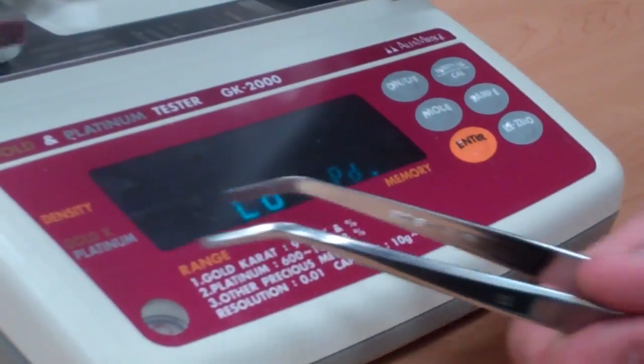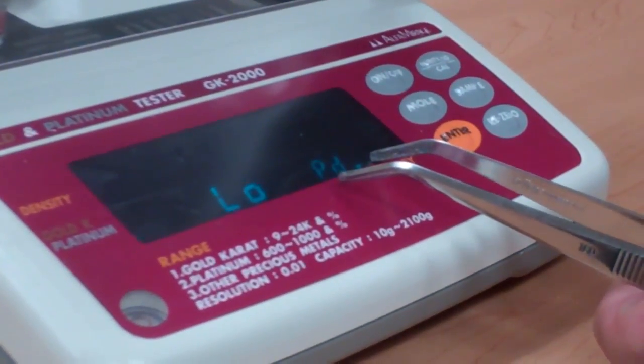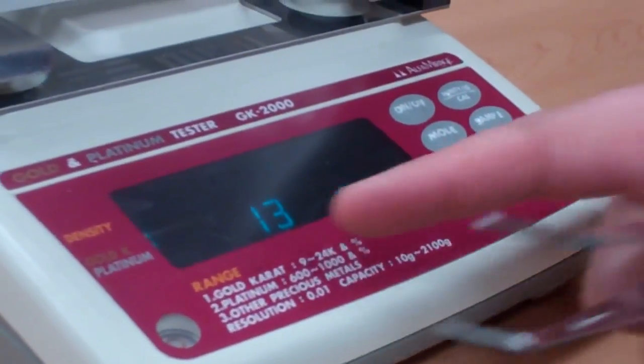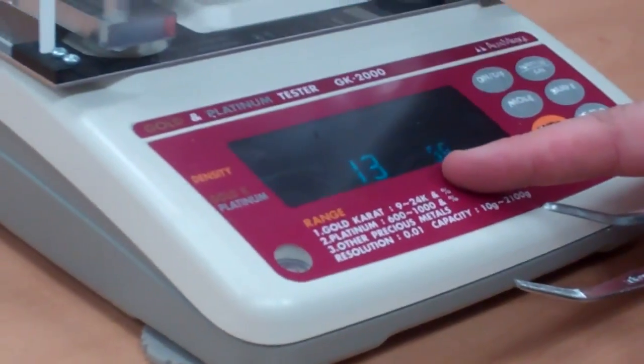Platinum is for platinum testing. If it is not platinum, it will say low PD. And then the third mode would be to see your specific gravity number for the item.